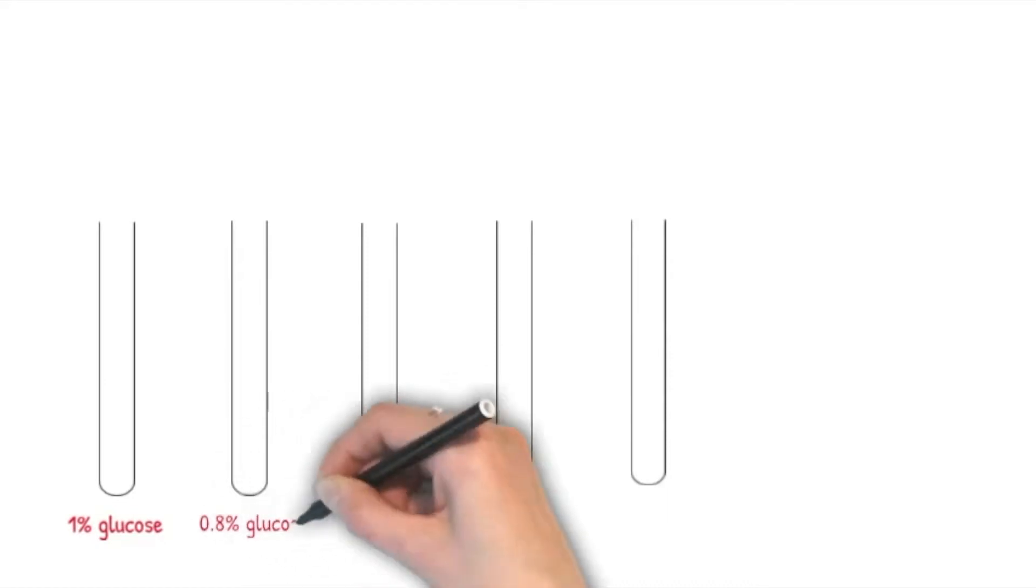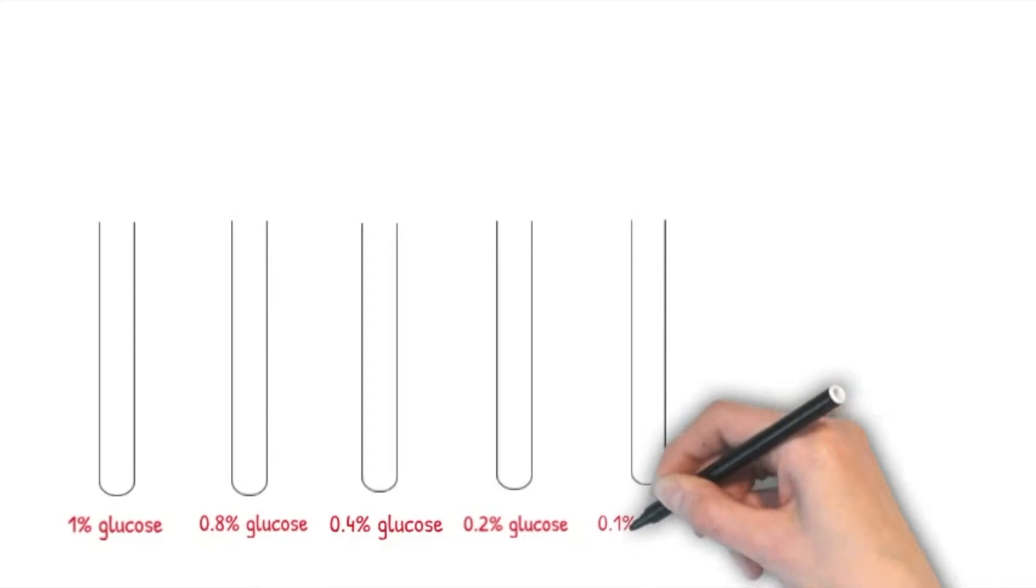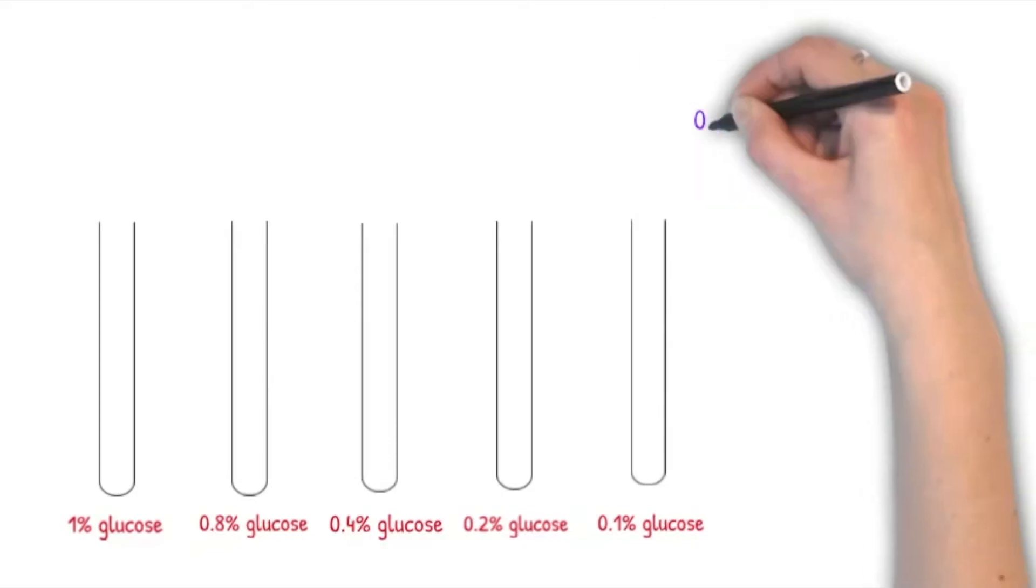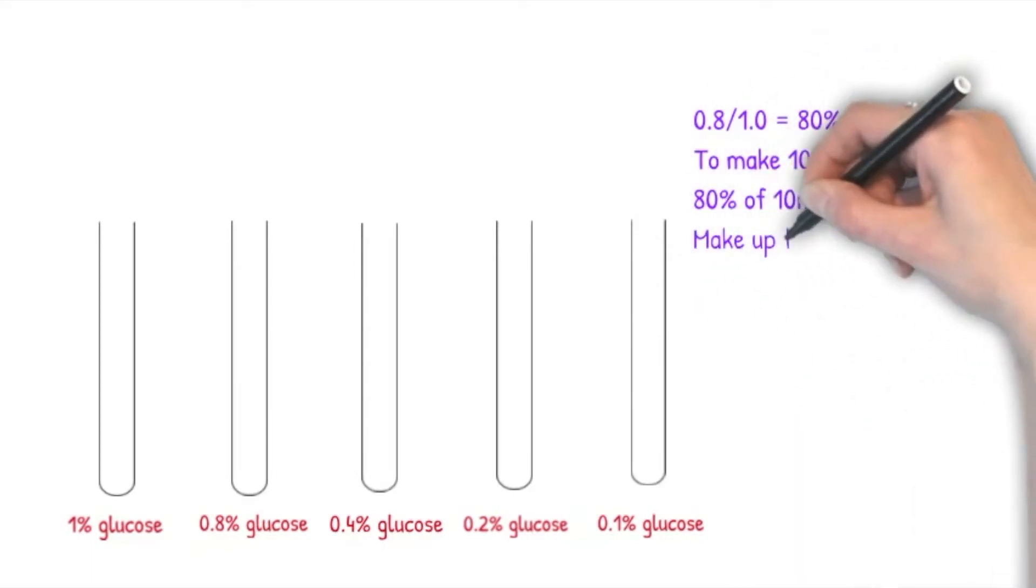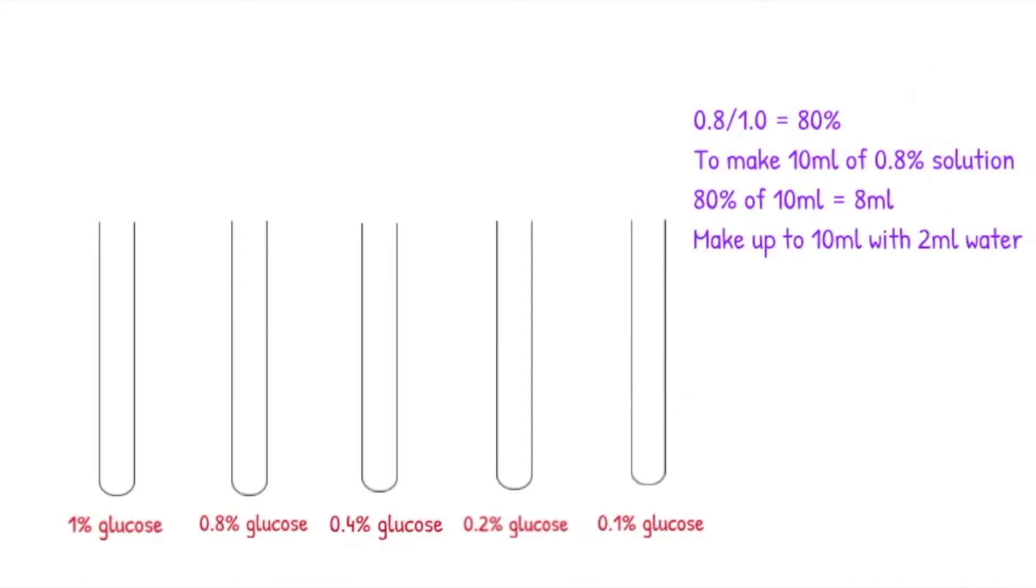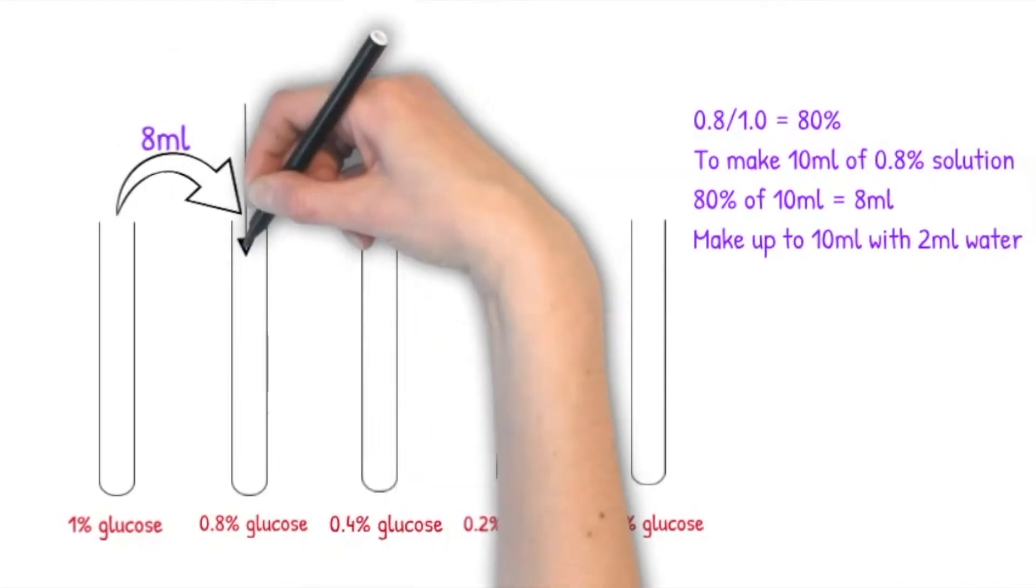Before we can start the experiment, we need to use the 1% glucose solution to make up solutions of 0.8%, 0.4%, 0.2%, and 0.1% glucose solutions by the process of serial dilutions. To make serial dilutions easier, it is often best to make the solutions up to a volume of 10 milliliters. For this first one of making 0.8% from 1%, 0.8% is 80% of 1%, so 80% of 10 milliliters is 8 milliliters and then we make up to 10 milliliters with 2 milliliters of water.